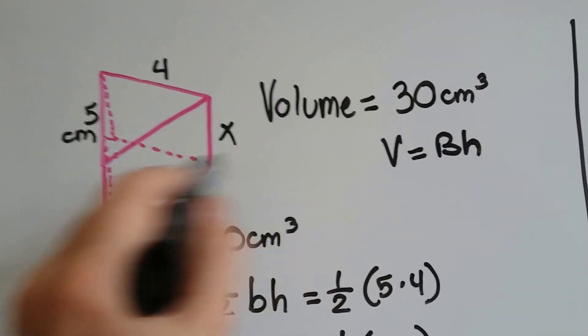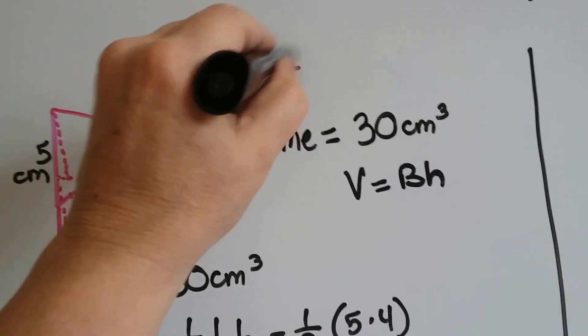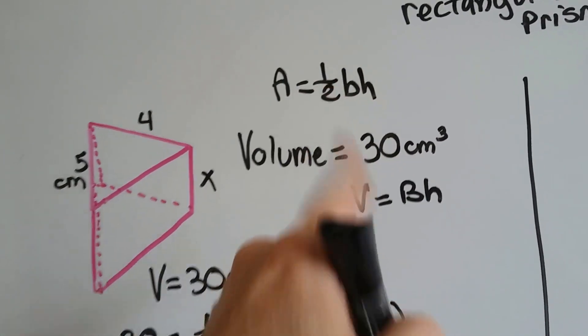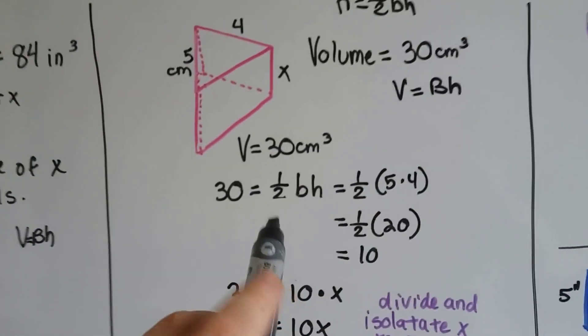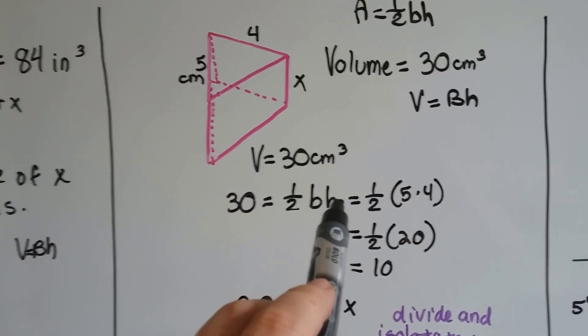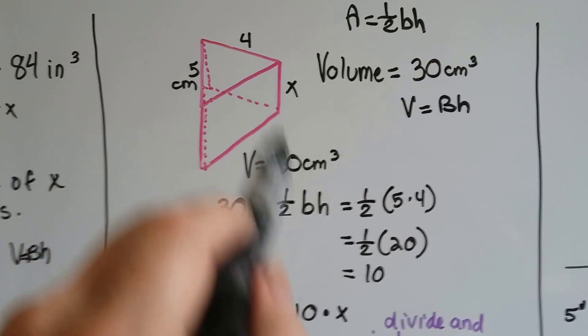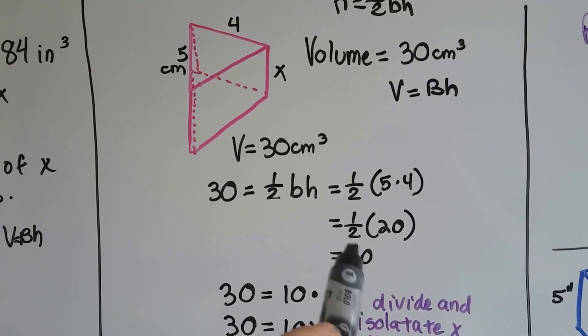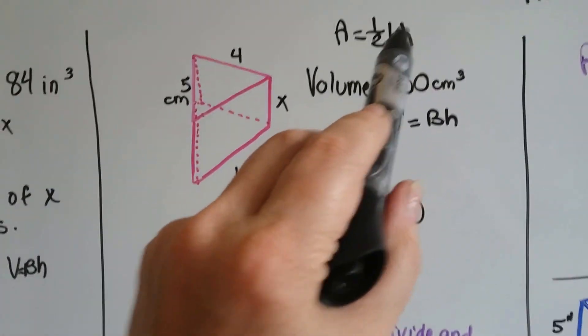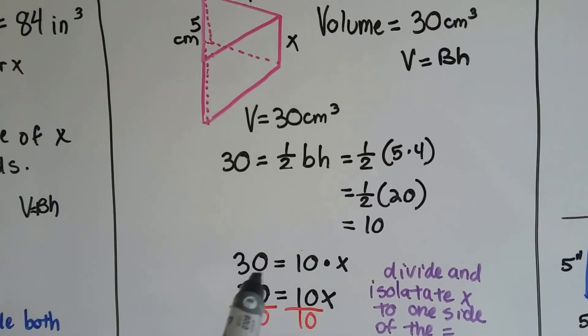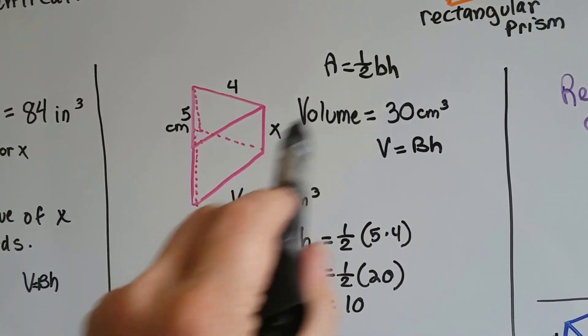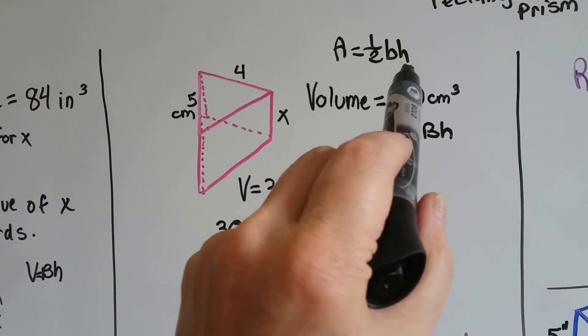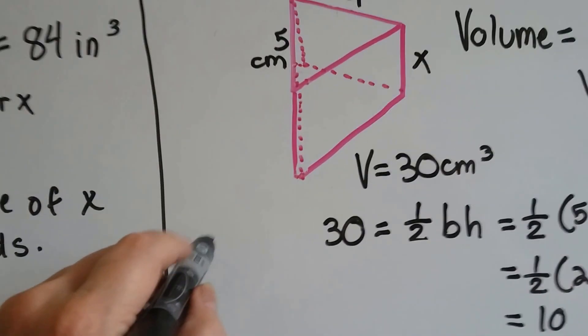In place of the v in the formula we put the 30. We're going to find the area first, and you know the area for a triangle: A = ½bh. So we're going to do that first, half times the base times the height. This is 5 times 4, half of 5 times 4 which is 20, is a 10. So now we know that the base is 10, so it's 10 times x.